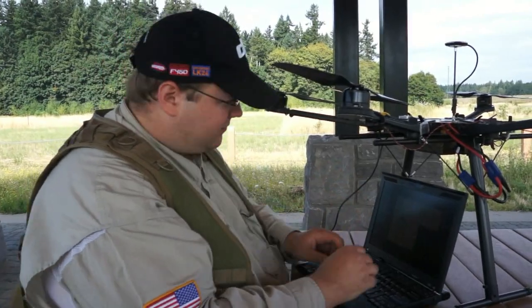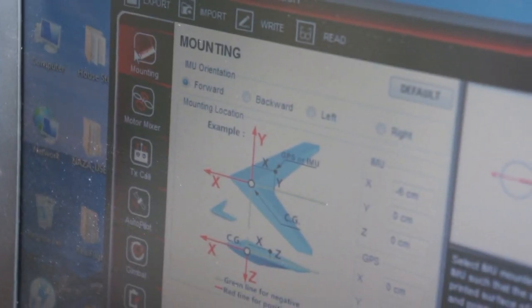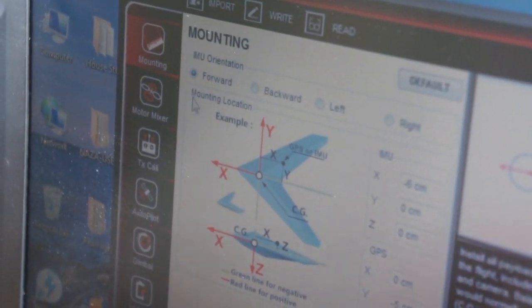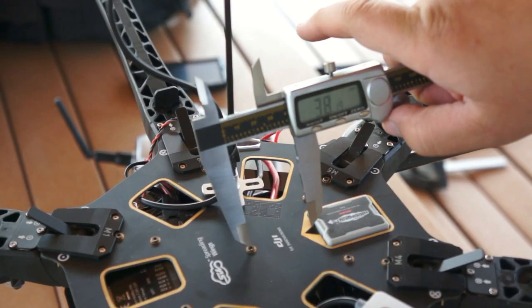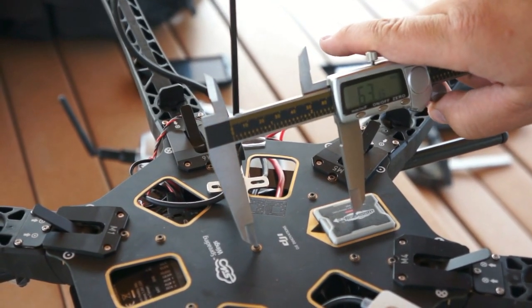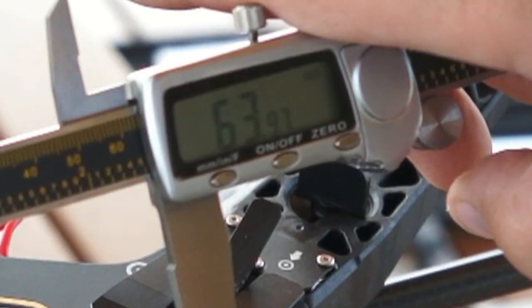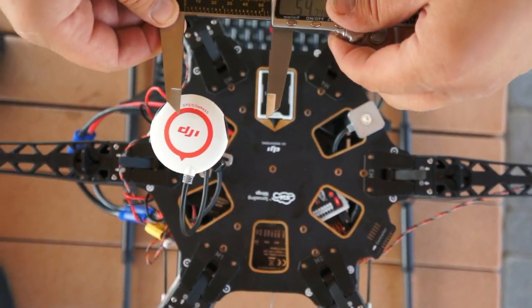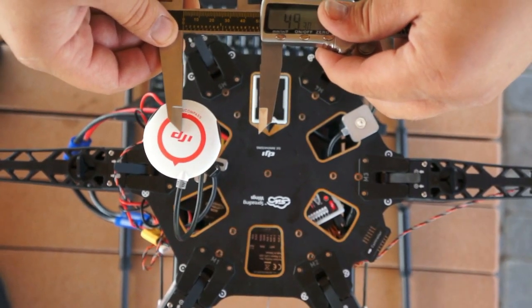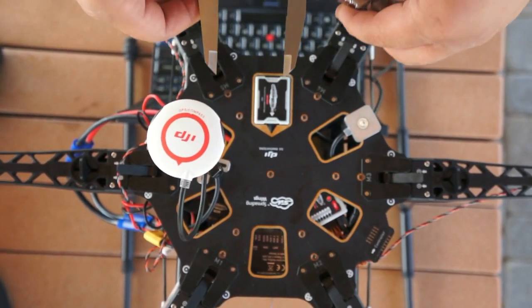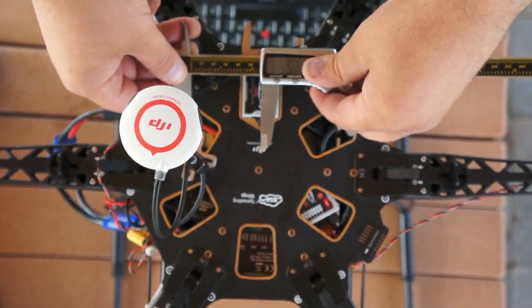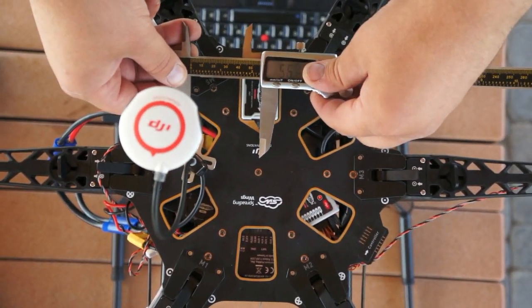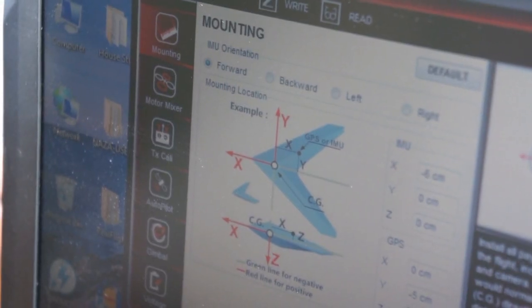So we're going to work our way through the Wukong Assistant software right now. The first screen we have here is the mounting, which you specify the offset of the IMU and the GPS both in this case, and the orientation of the IMU in case you can't actually mount it facing forward. That makes for a really convenient setup if you have an odd shaped craft or want to put the GPS somewhere else. Now, it's best to have it as close to center as possible, but if you can't you just enter in the calculations here as far as its offset.